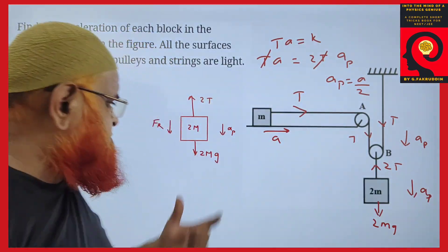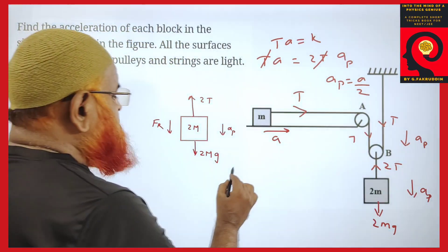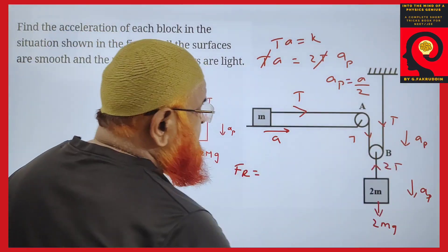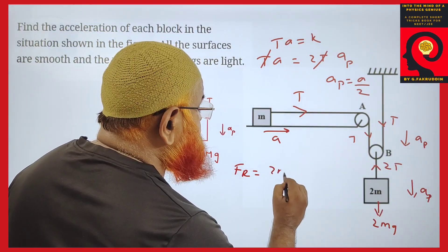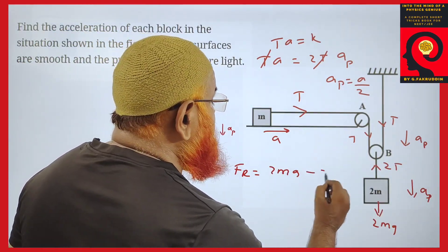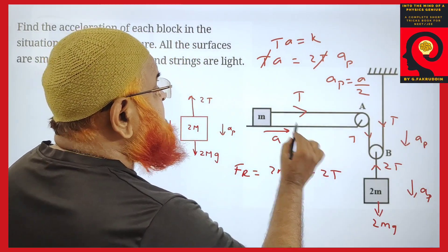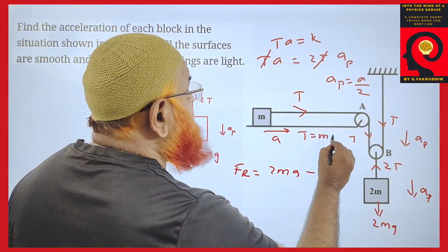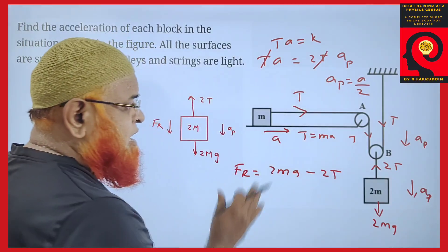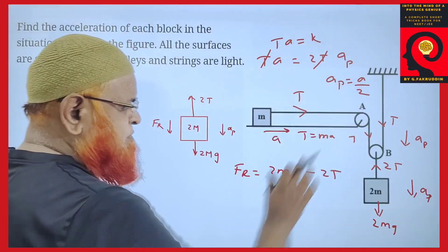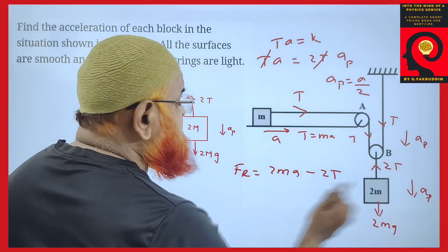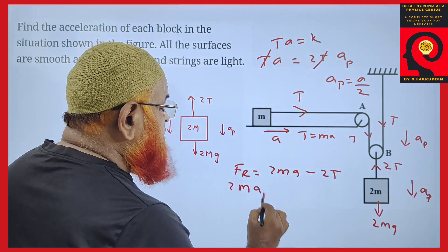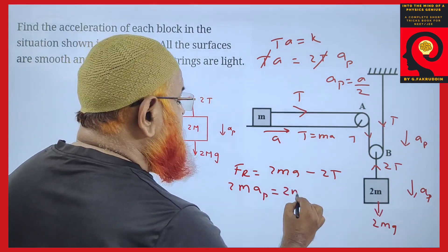Once we get that relation, we take this block separately and study its free body diagram. The resultant force acts downwards: resultant force on this block is the dominating force, taken as 2MG minus 2T. The tension acts on the block as M into A, and the block has mass 2M with acceleration of the pulley AP.